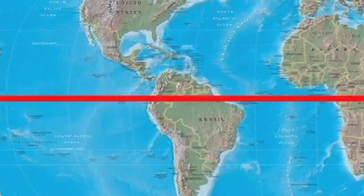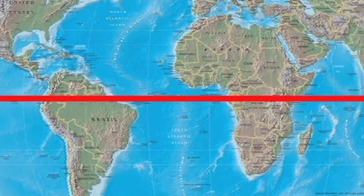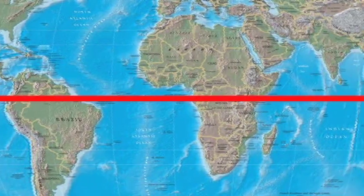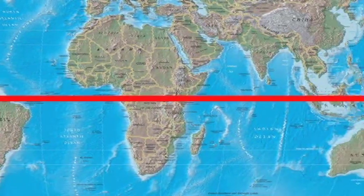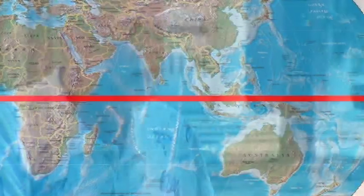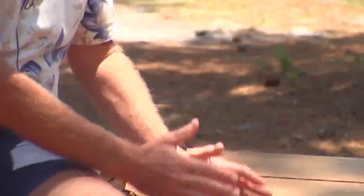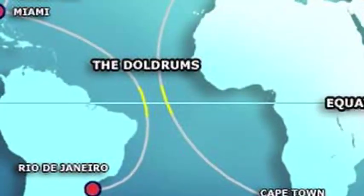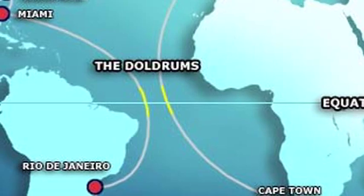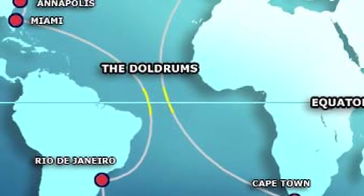If we take the equator as an example — if this is the equator — what happens at the equator? Well, obviously, we get the most solar energy there. We get heating of the atmosphere. What does hot air do? It rises. So right at the equator itself, you have areas where there is virtually no wind.